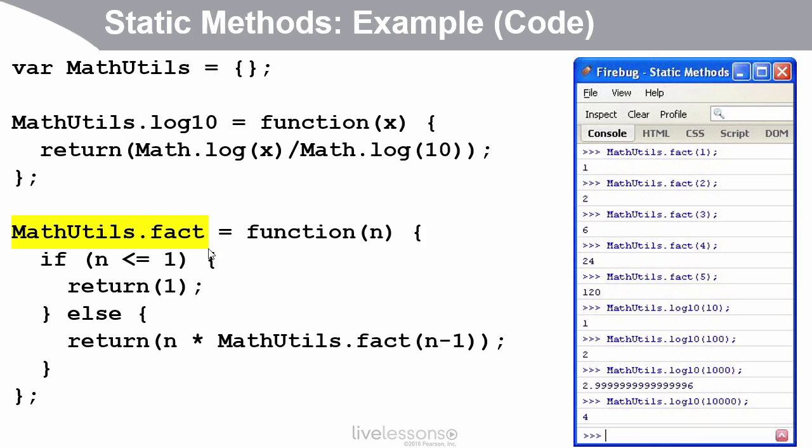So if you think of factorial, factorial is just the product of consecutive numbers from one up. For example, two factorial is two times one. Three factorial is three times two times one. Four factorial is four times three times two times one. And if I told you to define a function to compute the factorial, you could do it with a loop.